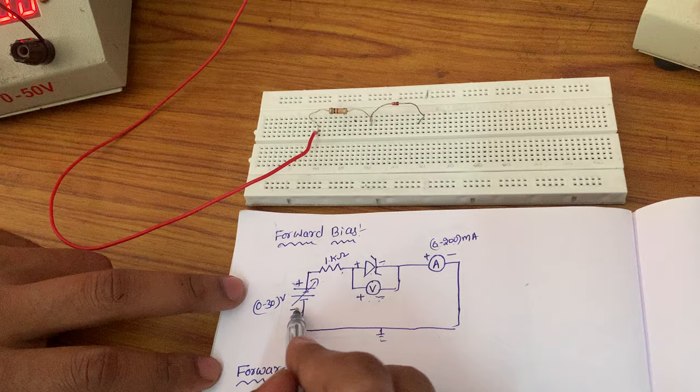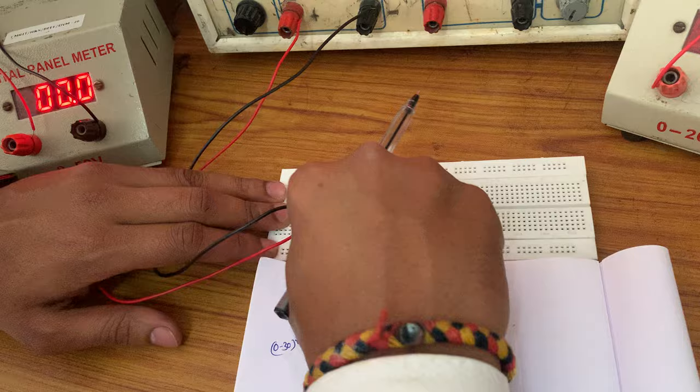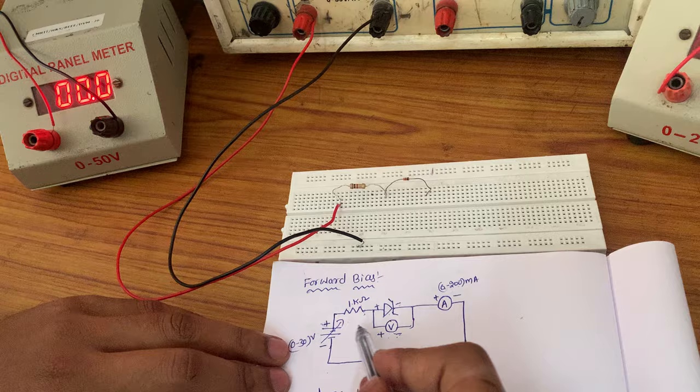Next, the RPS negative is connected to ground. This is the RPS negative — I am connecting it to the ground. Ground terminals we should connect here.